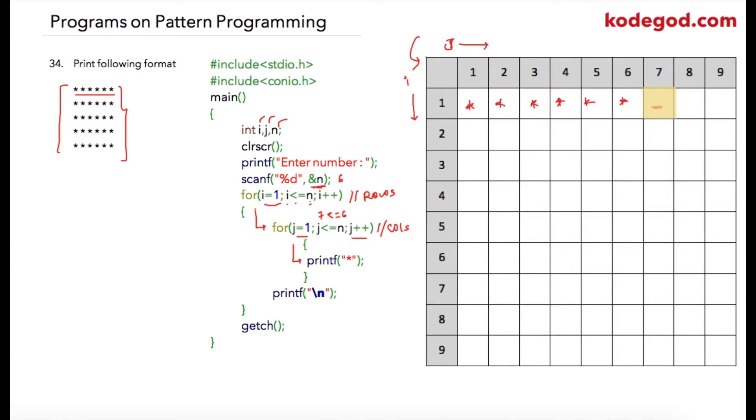Once my condition becomes false, it will come out of this for loop, and then we are instructing for a new line character, so the cursor will move on to the next row. And then as this was my last statement of this for loop, then i will be incremented. It will become 2.